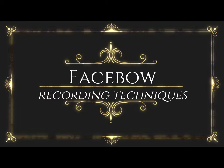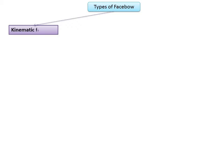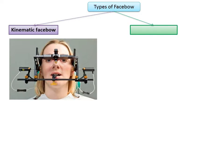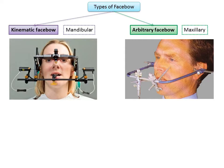In the previous presentation we discussed about facebow — the history, definition, and different types. Let's recapitulate: there are two types of facebow — kinematic and arbitrary. Kinematic facebow is the mandibular facebow, where the bite fork is attached to the mandibular arch, whereas arbitrary facebow is the maxillary facebow, where the bite fork is attached to the maxillary arch.